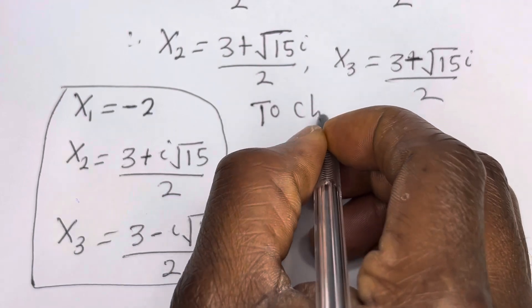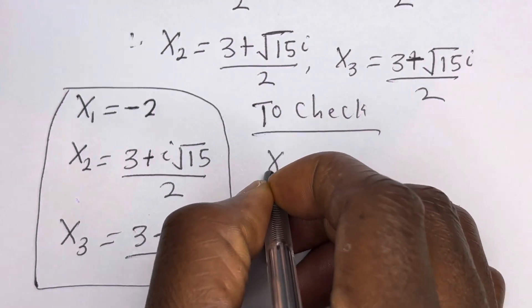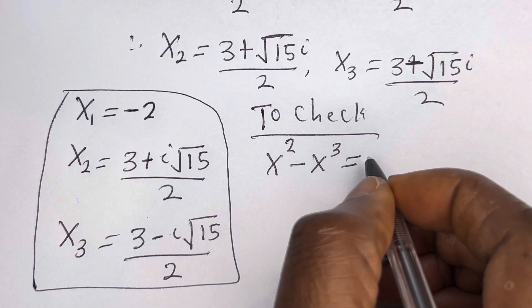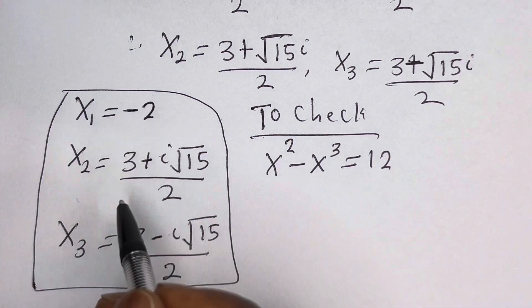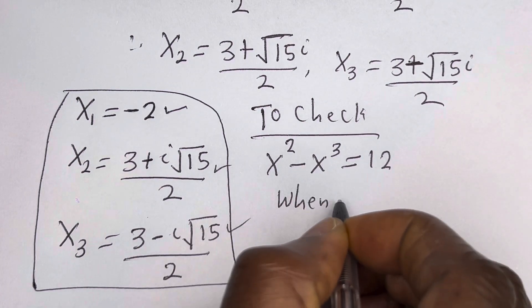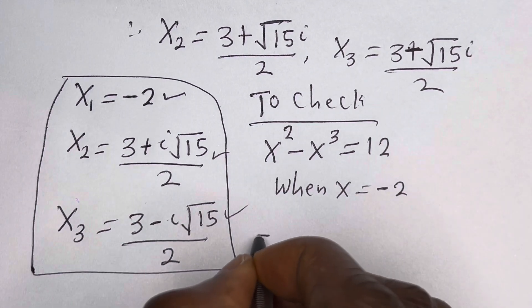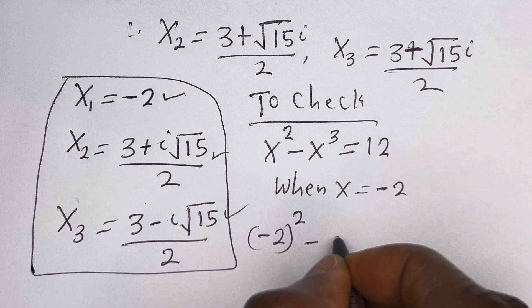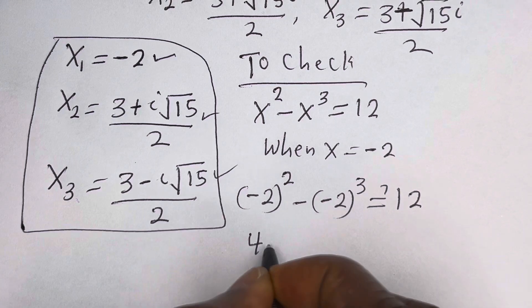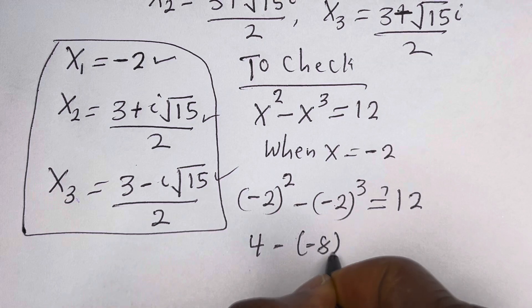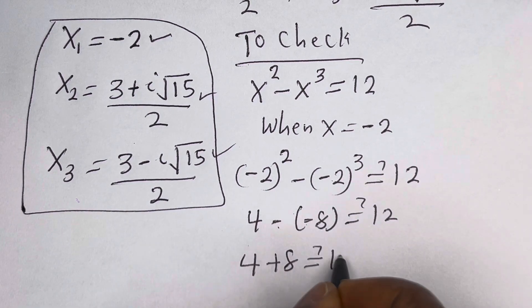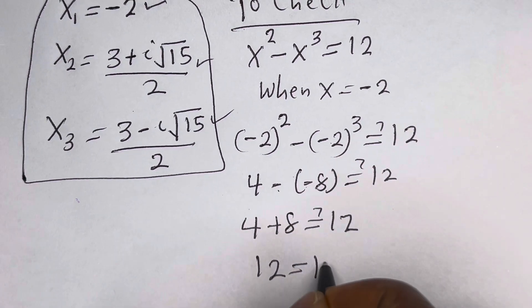These are the values of s. We may check to confirm if this answer is right. We have the given equation s squared minus s raised to power 3 is equal to 12. When s is minus 2 — the real root — substituting: minus 2 squared minus minus 2 raised to power 3 must equal 12. That gives 4 minus minus 8, which is 4 plus 8 equals 12, which is true.